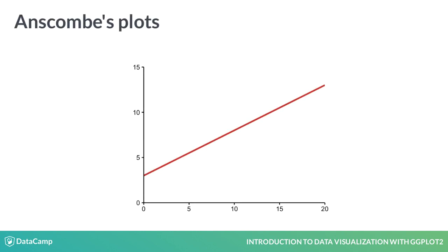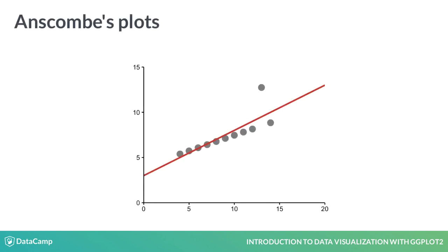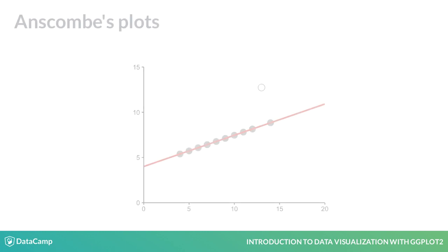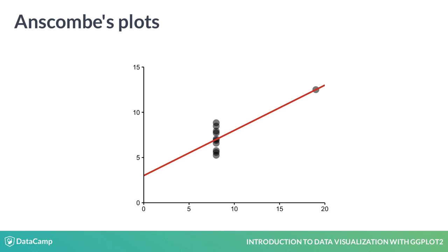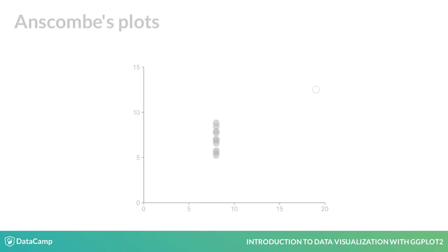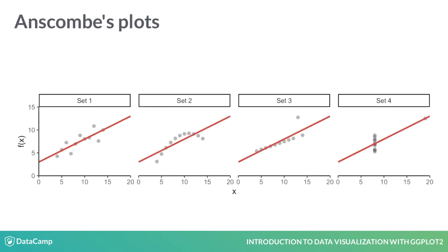Here's a classic example from Francis Anscombe, first published in 1973. When we imagine a linear model, as presented in this anonymous plot, we imagine that we are describing data that looks something like this. But this same model could be describing a very different set of data, such as a parabolic relationship, which calls for a different model. Or data in which an extreme value has a large effect, which becomes clear when the outlier is removed. And sometimes the model may be describing a relationship where, in fact, there is none at all, because some extreme values may be incorrect. If we relied solely on the numeric output without plotting our data, we'd have missed distinct and interesting underlying trends.